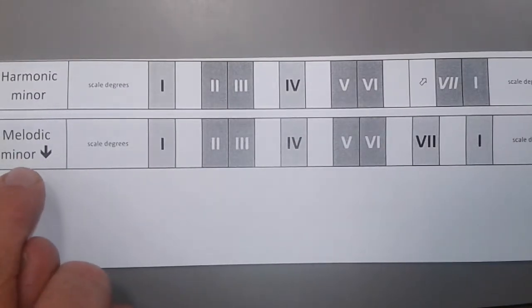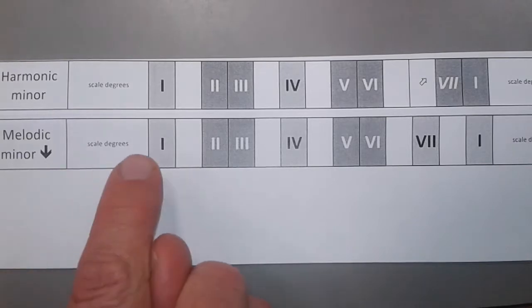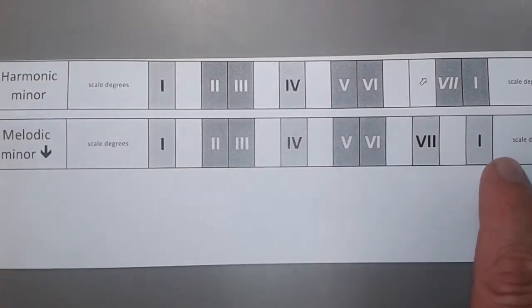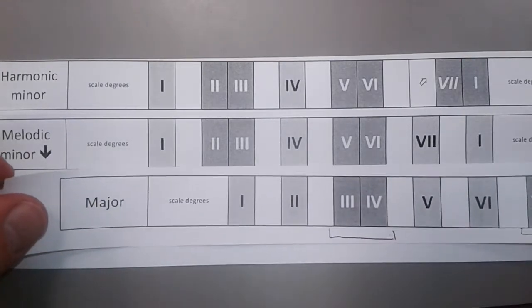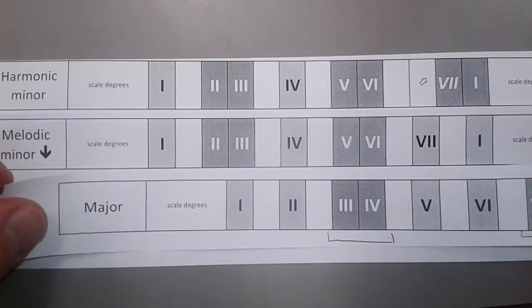The descending melodic minor scale, which is also called the natural minor scale, has exactly the same notes as the key signature and is essentially the same as its relative major scale, except that it starts on a different note.